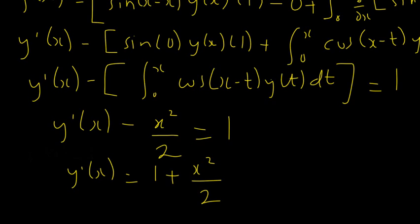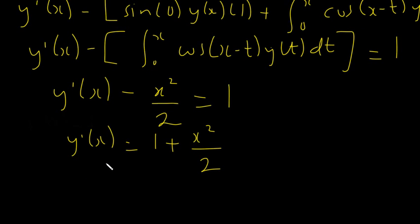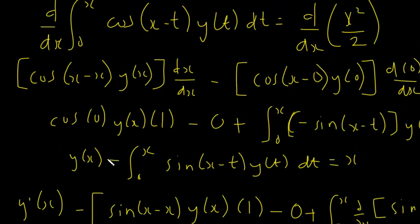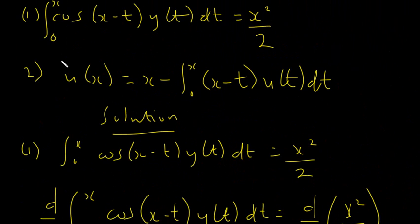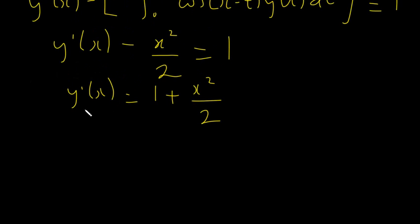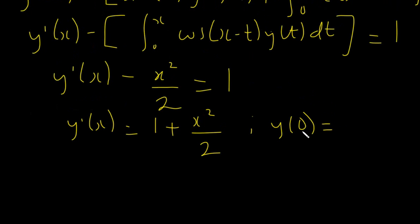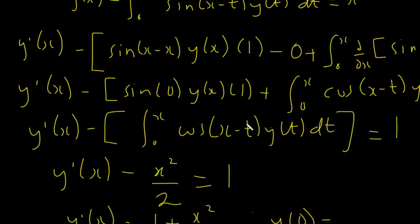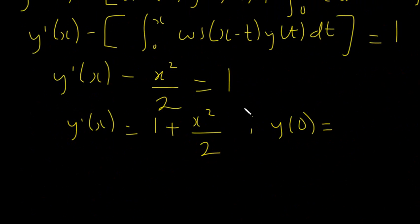This is a first-order linear differential equation — our Cauchy problem. We need an initial condition. We always pick the lower limit as the point for the initial condition, so we need to find y(0). We search through the equations we've derived for where y(x) appears explicitly, then substitute x = 0.